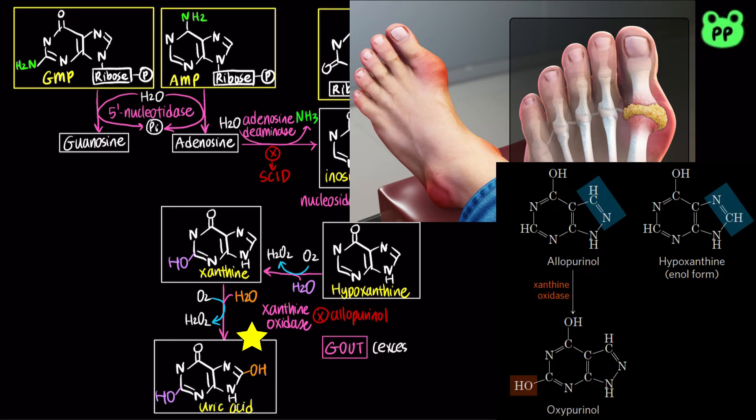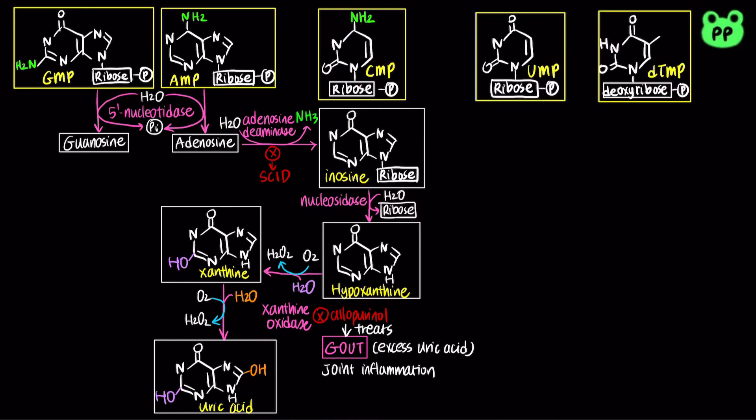Gout can be treated by the drug allopurinol, which competitively inhibits xanthine oxidase, decreasing the amount of uric acid produced and excreting xanthine and hypoxanthine instead, both of which are more water-soluble.